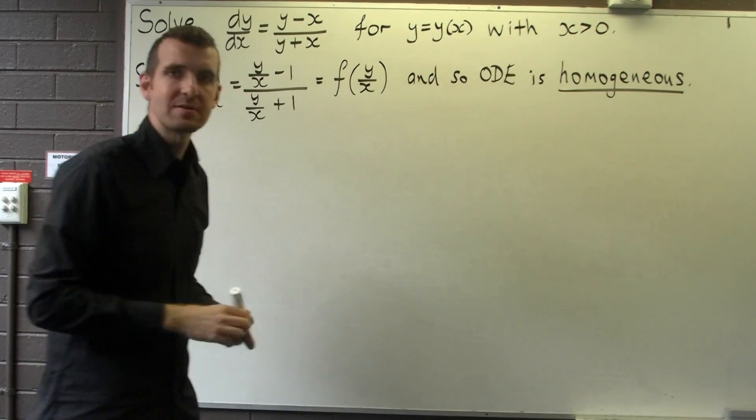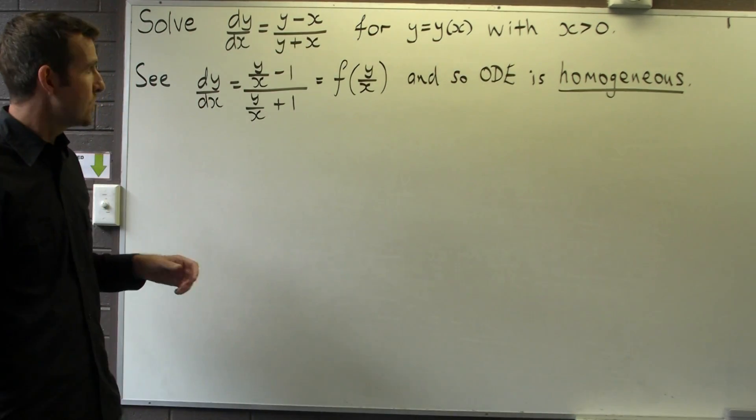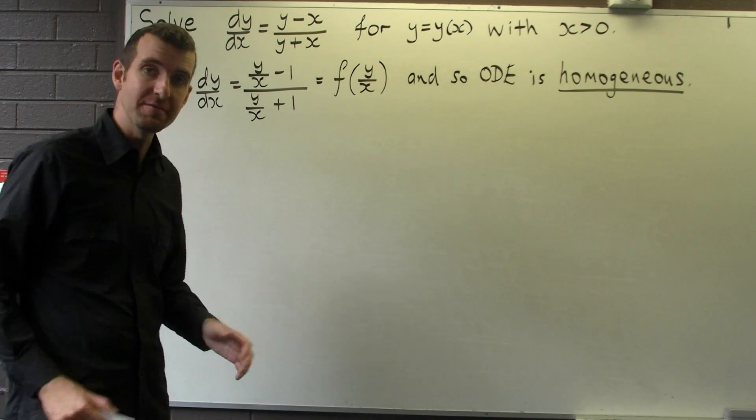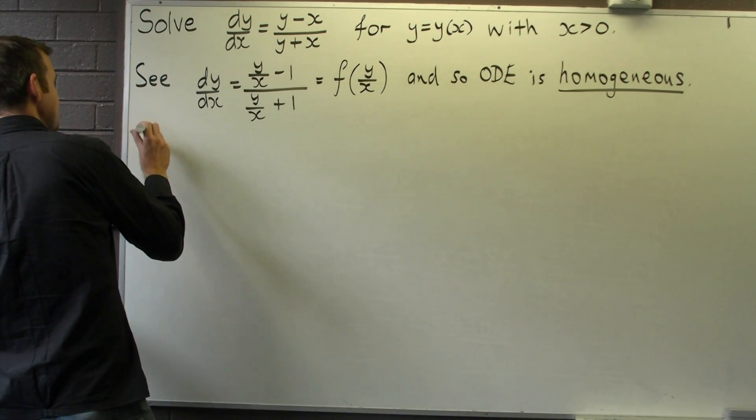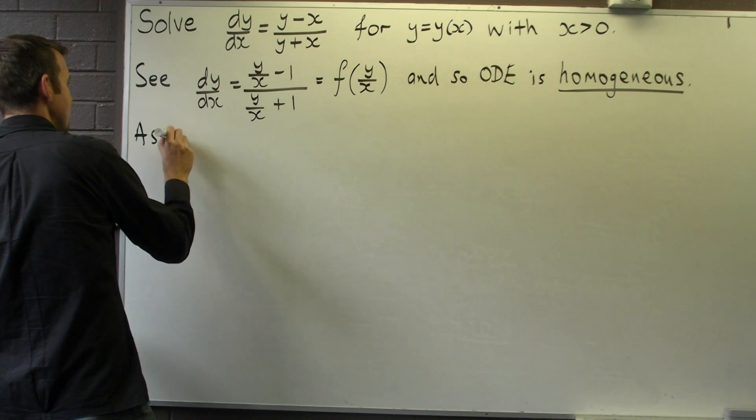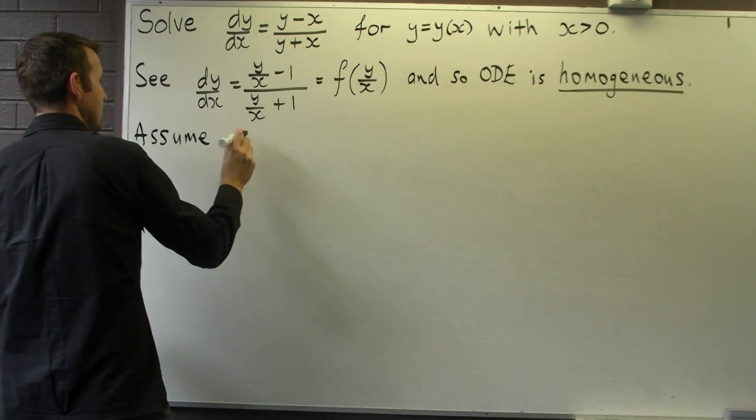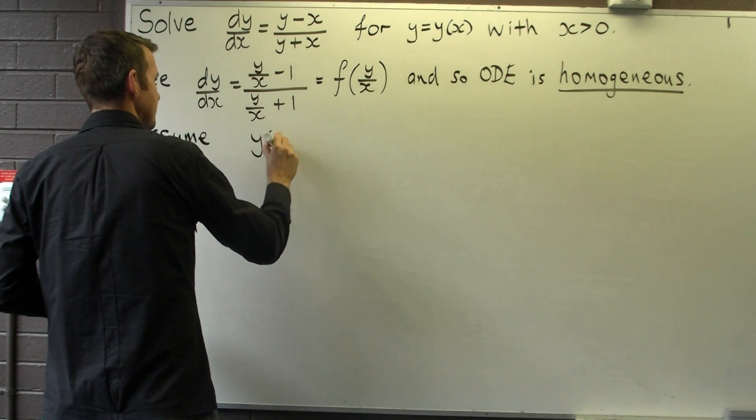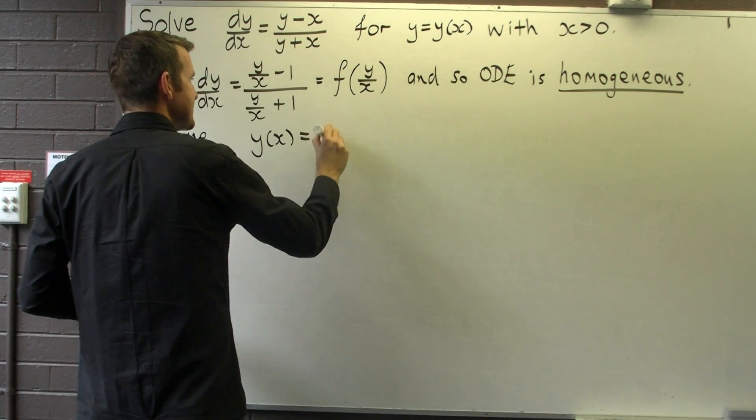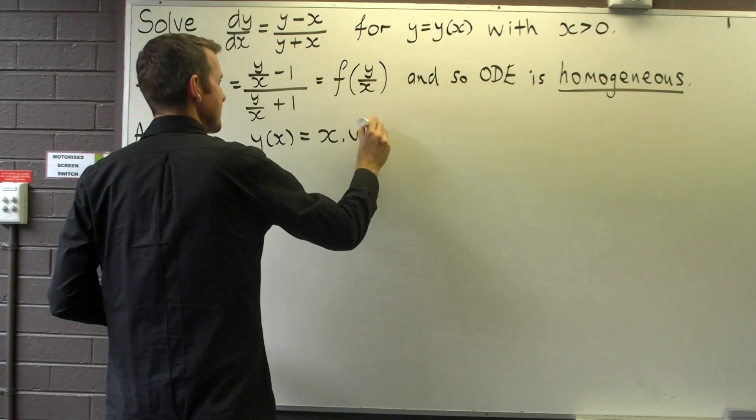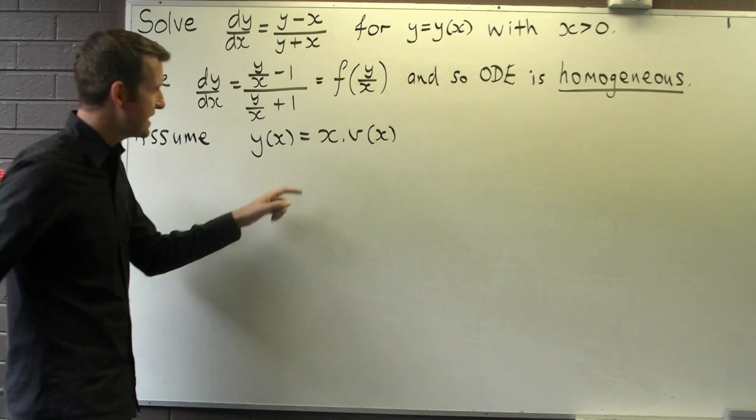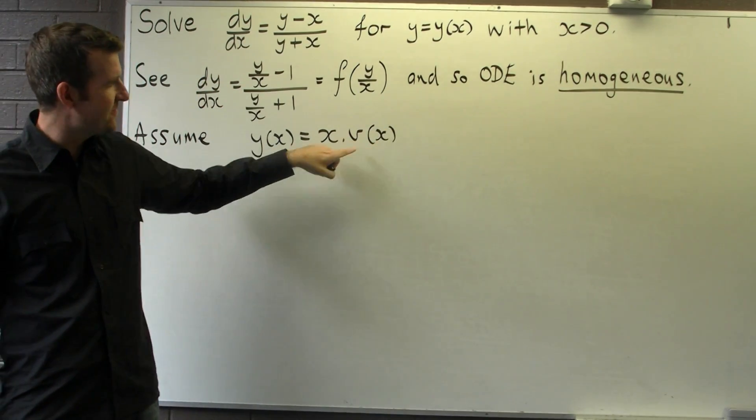So how do we solve a homogeneous equation? Well, it relies on a substitution, and in particular, we assume the solution y is in the following form: It's x times some other function, v of x.